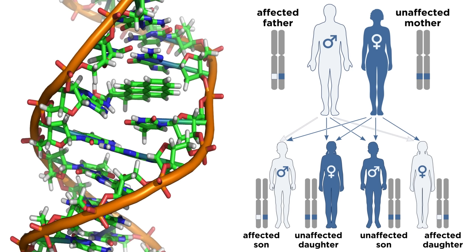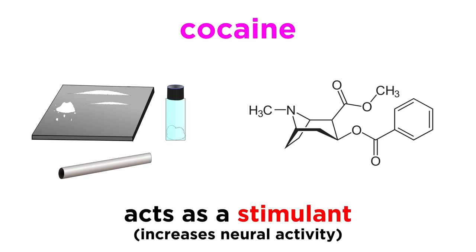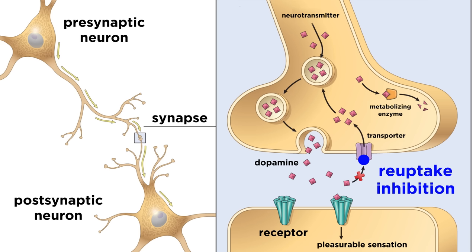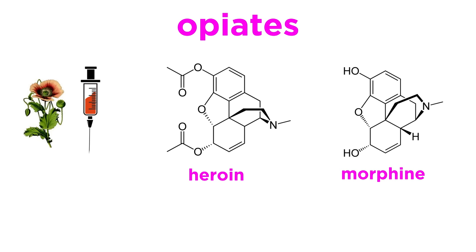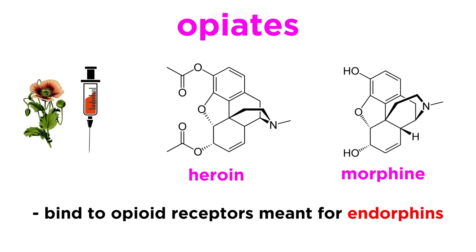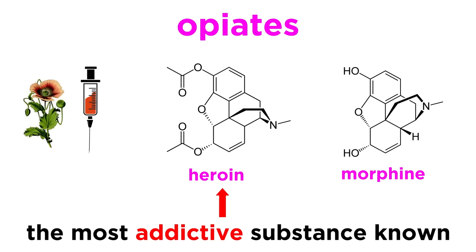There is also a major genetic component to alcohol addiction, or a predisposition that has about a fifty percent probability of being passed on to offspring. Cocaine, on the other hand, is a stimulant, meaning it increases neural activity. It acts by inhibiting the reuptake of dopamine from the synaptic space, thus keeping their levels quite high. Opiates like heroin and morphine bind to opioid receptors that normally bind to endogenous neurotransmitters like endorphins, so they mimic innate mechanisms of pain reduction, causing euphoria. Heroin is widely regarded as the most addictive substance we are aware of.